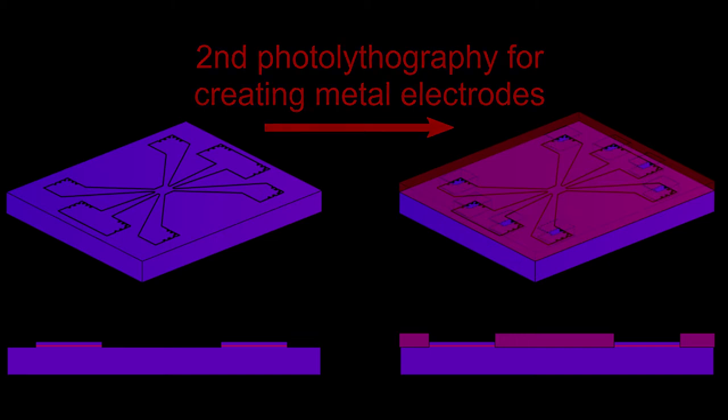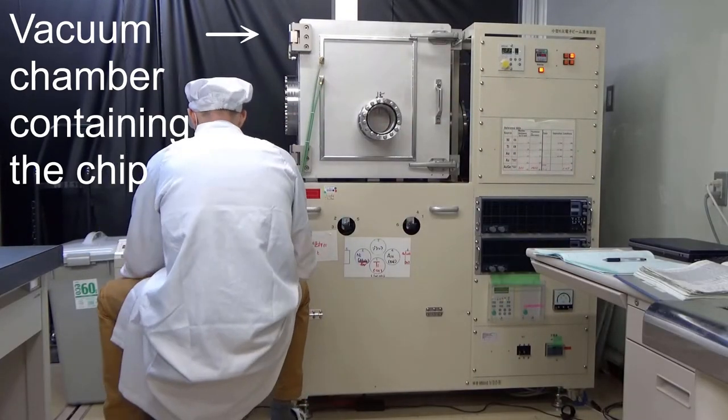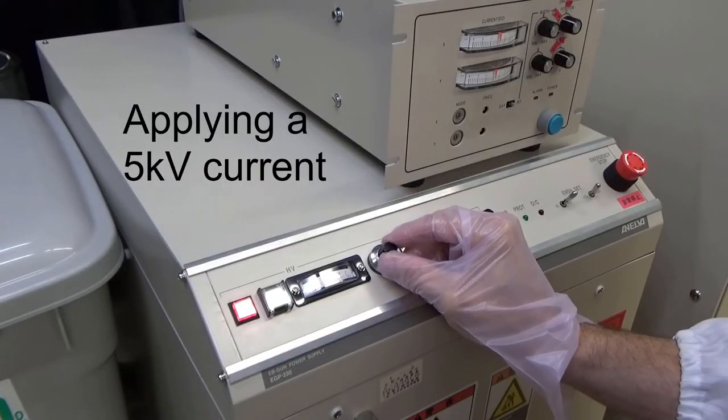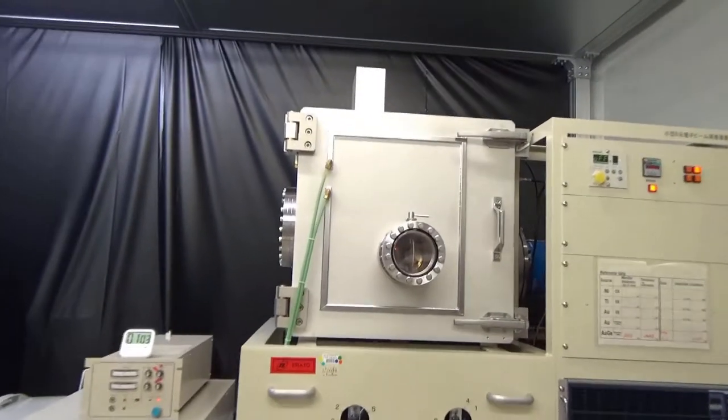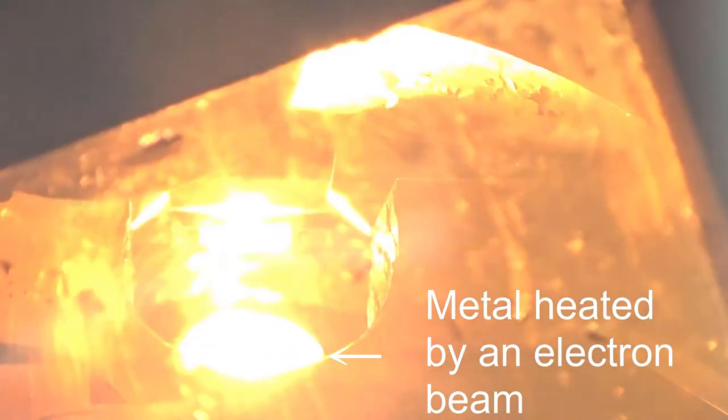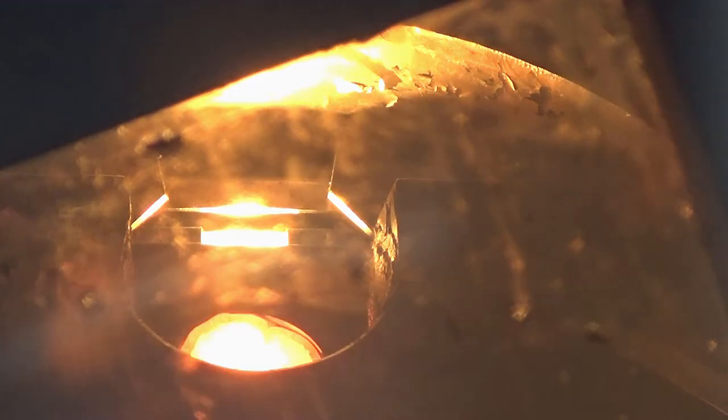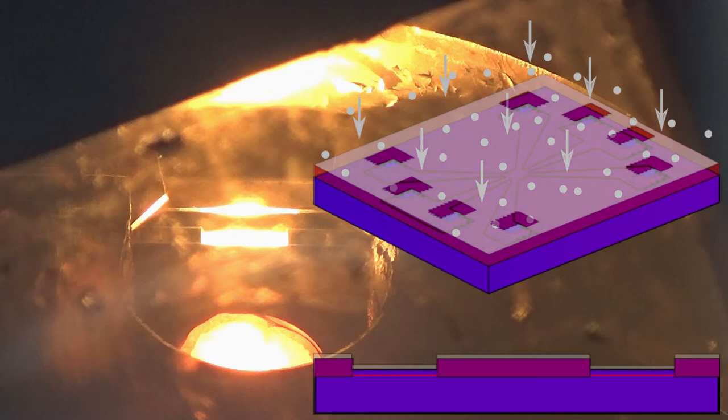After applying photoresist and patterning it, we place the chip in a vacuum metal deposition chamber. Inside the chamber is a metal that we wish to deposit onto the chip. This metal is heated by an electron beam until it evaporates. The evaporated metal gas accumulates on the chip in a thin layer.